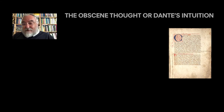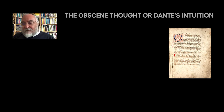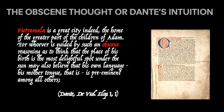Before concluding, let me tell you one surprising thing. Dante already knew about this. In his De vulgari eloquentia, he was very explicit about the fact that there are no better languages. He said so by adopting the idea that in a very large city — like Pietramala, which is in fact a very tiny small town in the Italian Apennines — 'Pietramala is a great city indeed, the home of the greater part of the children of Adam. And for whoever is guided by such obscene reasoning as to think that the place of his birth is the most delightful spot under the sun, they also believe that his own language, his mother tongue, is preeminent among all others.' This is really the result of a deep reflection, and nowadays it is supported by neuroscientific results.